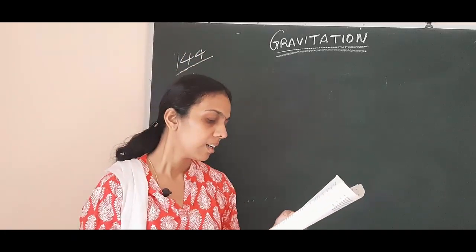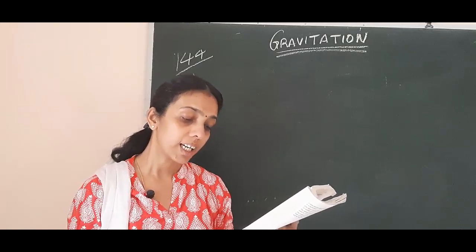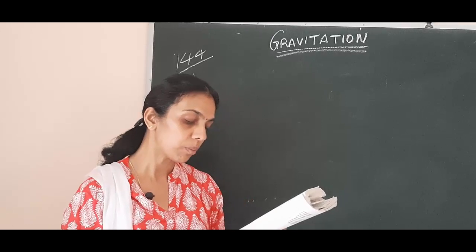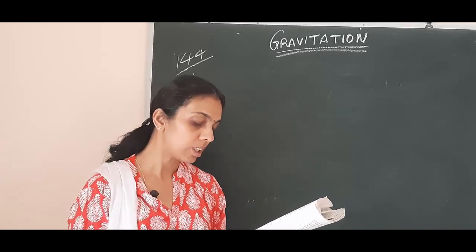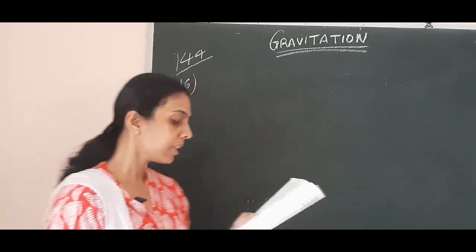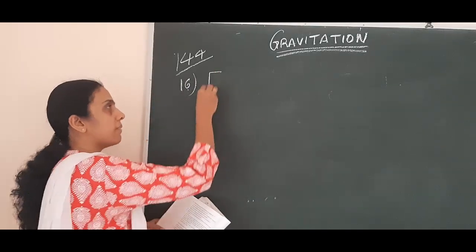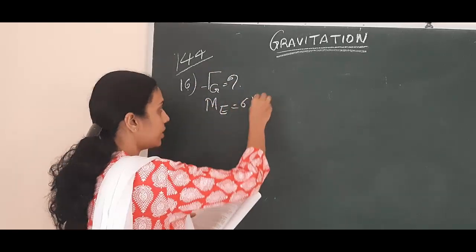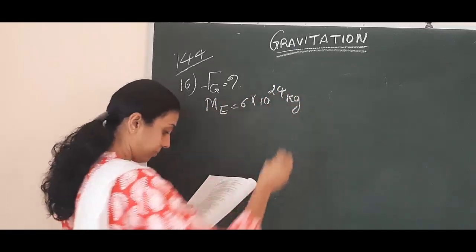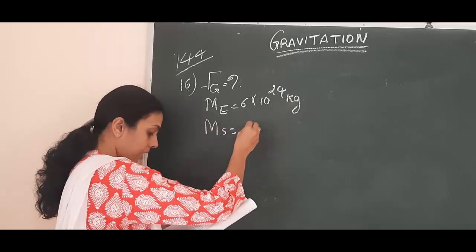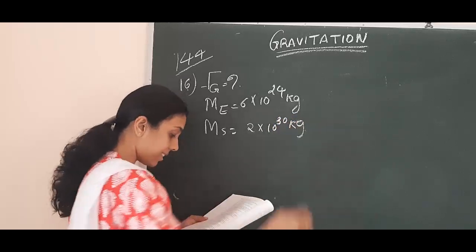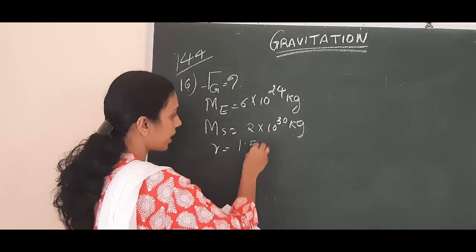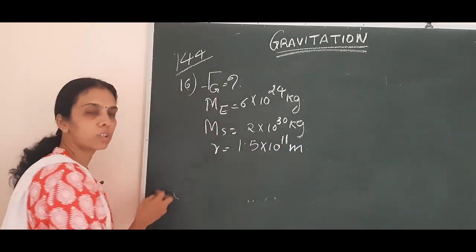Question 16 continuation. Calculate the force of gravitation between the earth and the sun, given that mass of earth is 6 into 10 to the power 24 kilogram and mass of the sun is 2 into 10 to the power 30 kilogram. The average distance between the two is 1.5 into 10 to the power 11 meter. We need to find out the gravitational force.